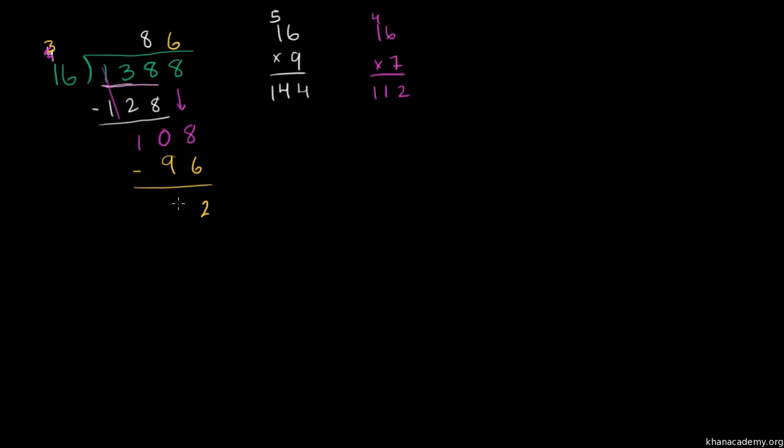Then you can just say 10 minus 9 is 1, or you could even borrow. You could make this a 10, and then that goes away. 10 minus 9 is 1. So then you have 12. And if we're not going into decimals, you're kind of done, because 16 does not go into 12. So 16 goes into 1,388 86 times with a remainder of 12. That right over there is your remainder.